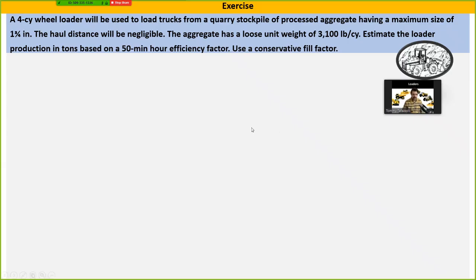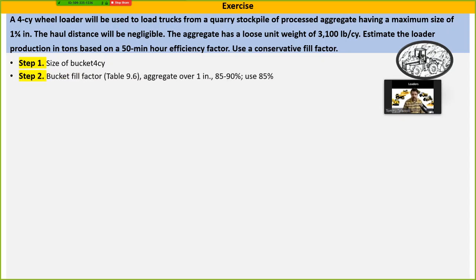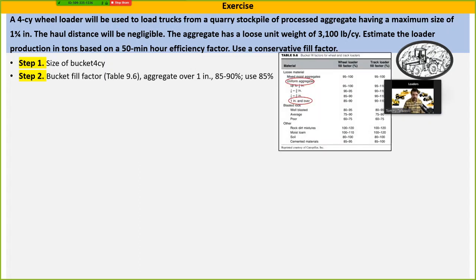Here is an exercise to find the production of a loader. Step one: the bucket size is 4 cubic yards. Step two: find the bucket fill factor using table 9.6, which requires two pieces of information — the type of material and size of aggregates. We have processed aggregates, which are uniform, with a maximum size greater than one inch. Since it is a wheel loader, the fill factor ranges between 85 to 90%.